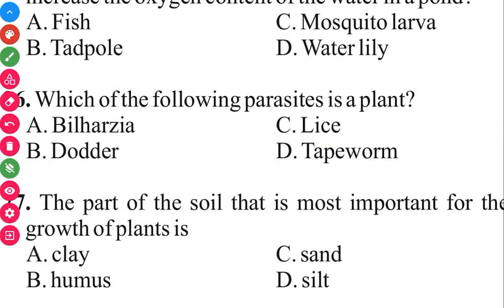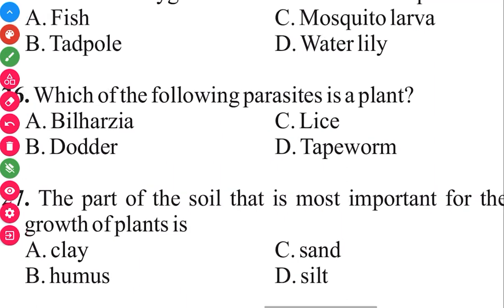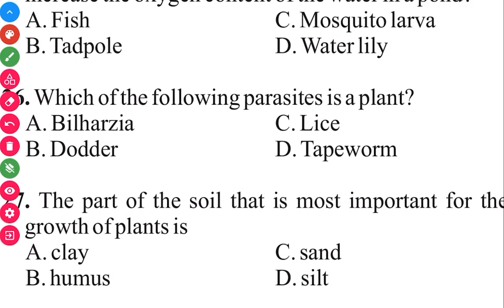The part of the soil that is most important for plant growth is humus. The answer in 3, 2, 1 is B, humus.